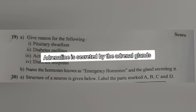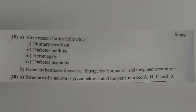19B. Adrenaline is secreted by the adrenal glands. Question 20A. A structure of a neuron is given below. Label the parts marked A, B, C, and D.